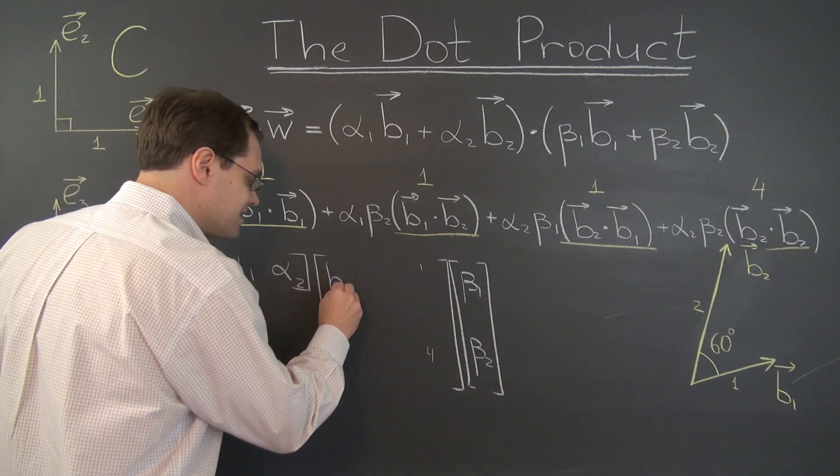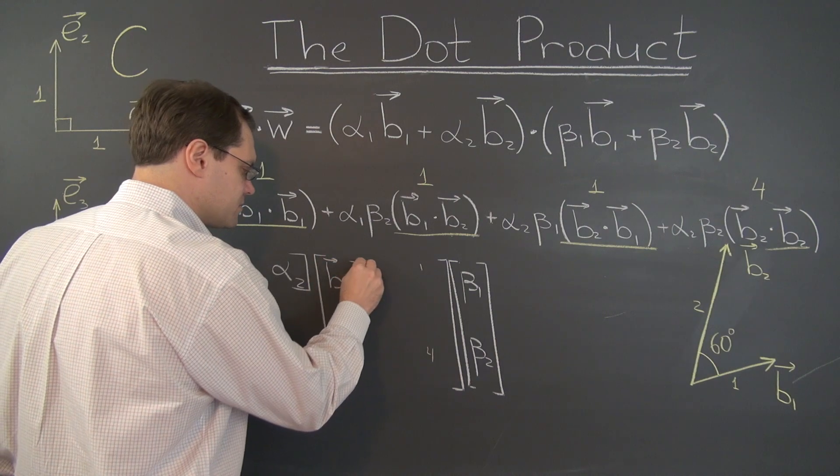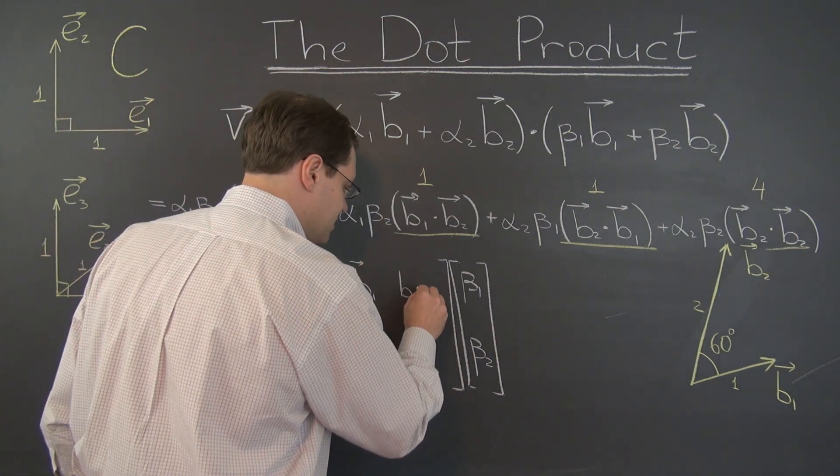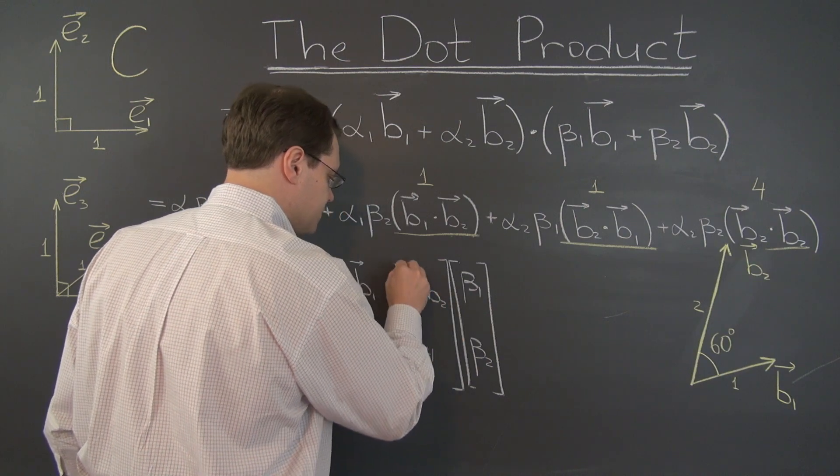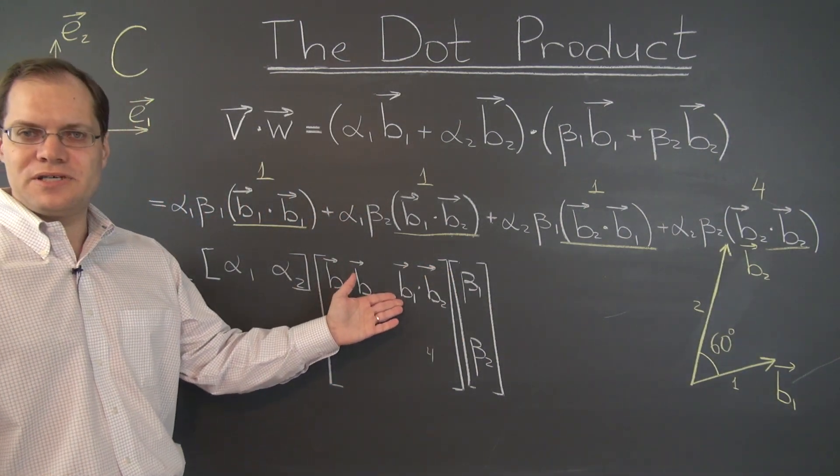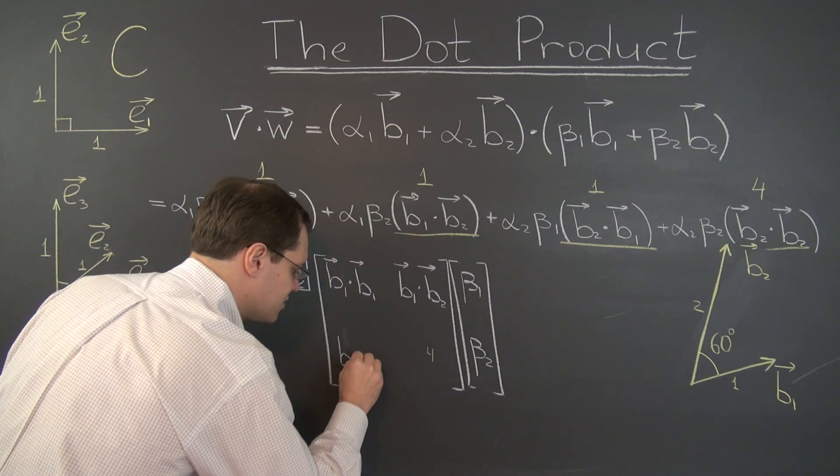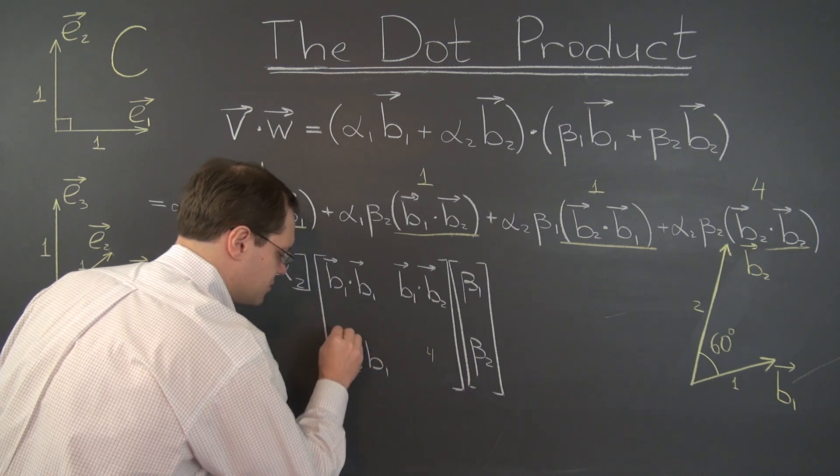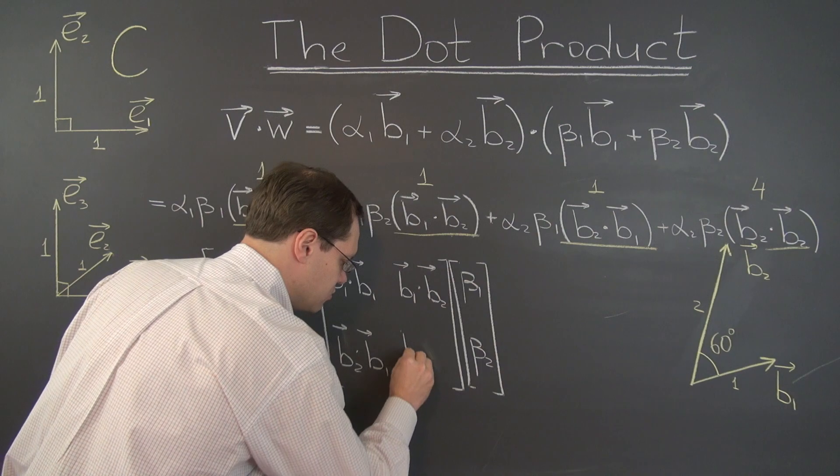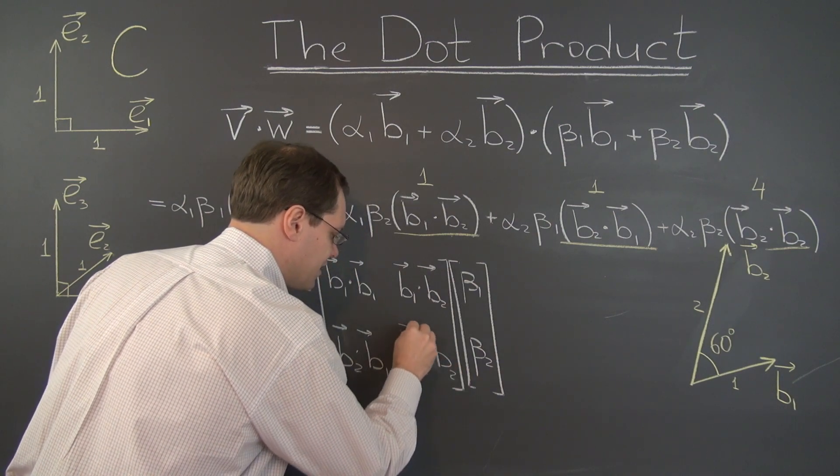And once again if the basis is not special in any way, what we would have instead of this one is the number b1 dotted with b1, and this number would be b1 dotted with b2, and this number right here you can call it b1 dotted with b2, but just to keep the pattern going we'll write it as b2 dotted with b1. Thanks to commutativity makes no difference whatsoever. And finally this term is b2 dotted with b2. And there you go.